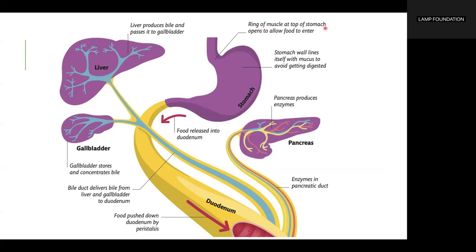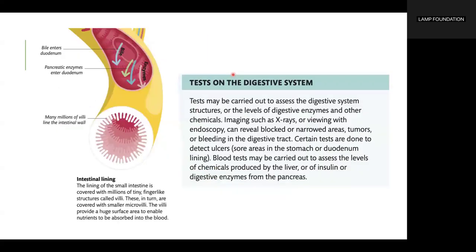A ring of muscle at the top of the stomach opens to allow food to enter. The lining of the small intestine is covered with millions of tiny finger-like structures called villi, which in turn are covered with smaller microvilli. The villi provide a huge surface area to enable nutrients to be absorbed into the blood.